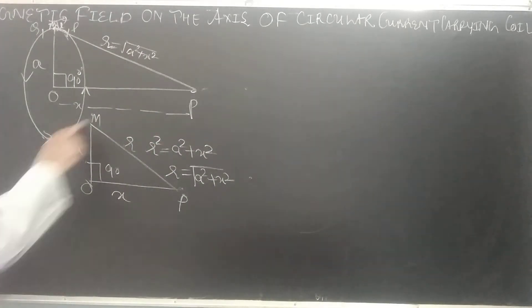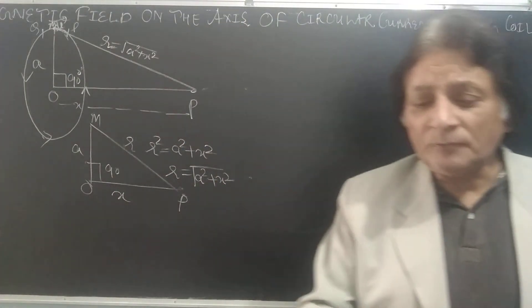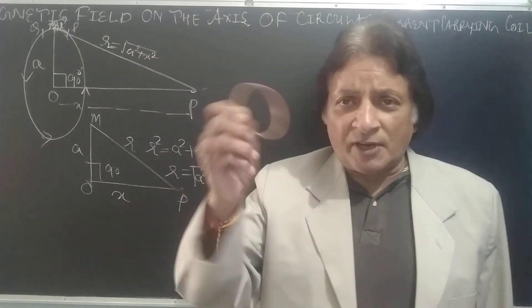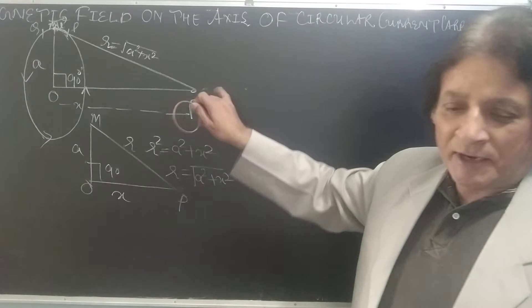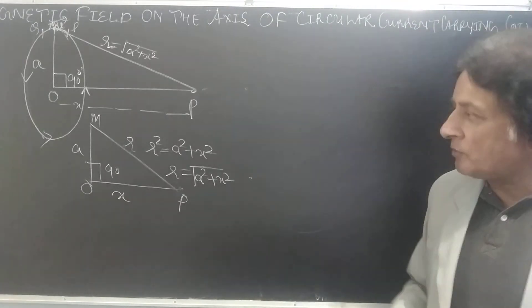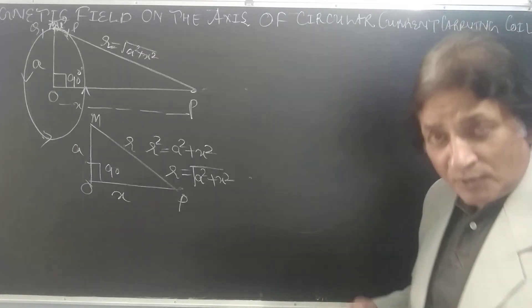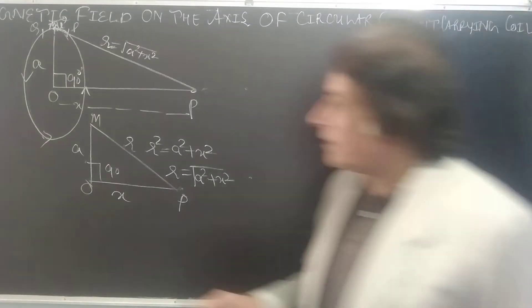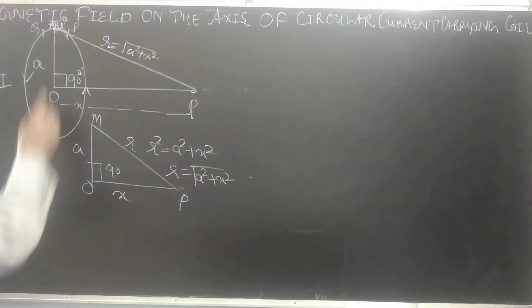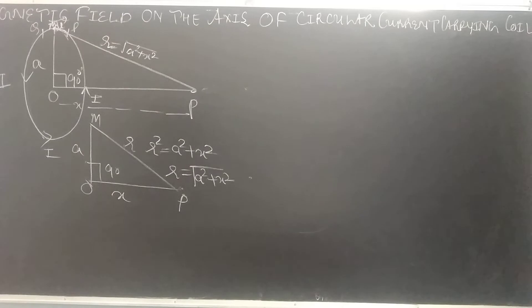We have placed R's value here. Now, we have a ring of radius A. From the center of this ring we take a point P, so OP = X and the ring's radius is A, giving R = √(A² + X²). P is the point where we find out the magnetic field. Current flowing through the coil is I.